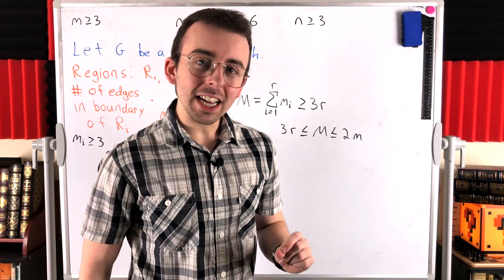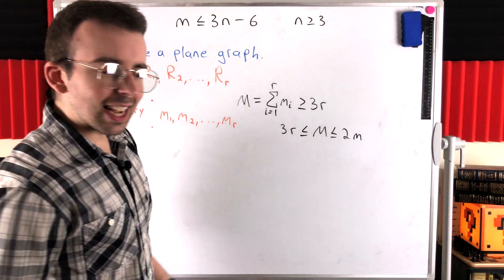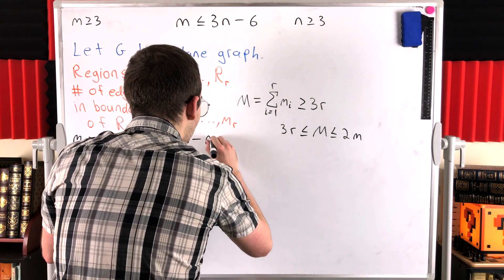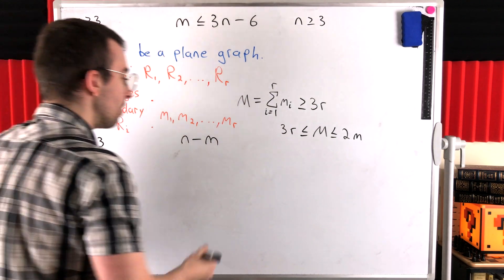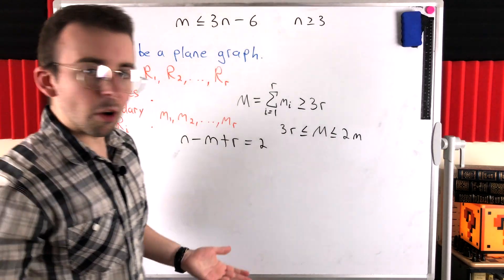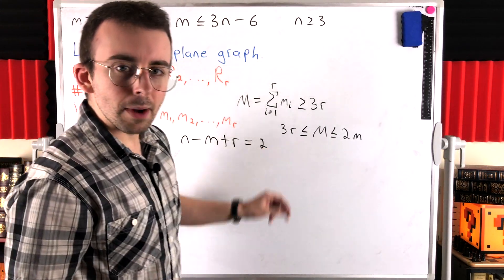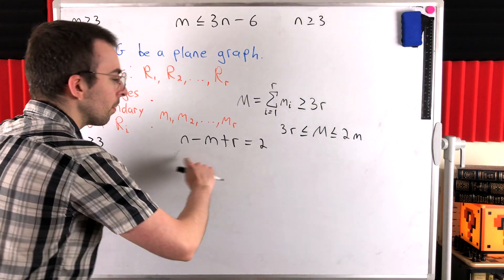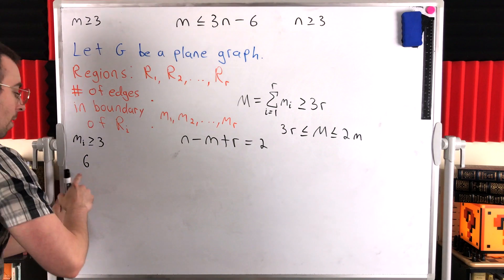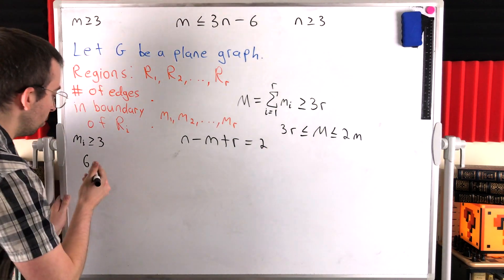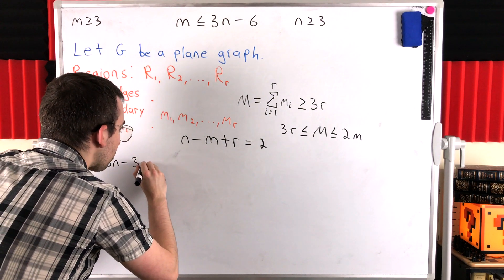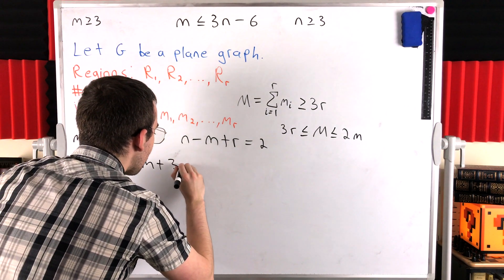Now we can apply Euler's formula. Euler's formula tells us n minus m plus r equals two. We don't know a lot about r by itself, but we know something about 3r. So let's multiply both sides by three: six equals 3n minus 3m plus 3r.